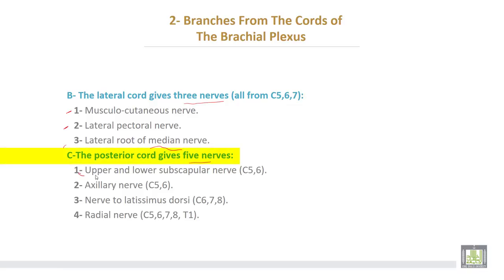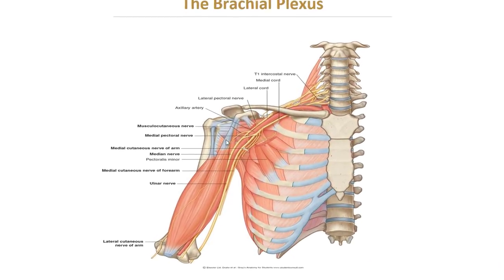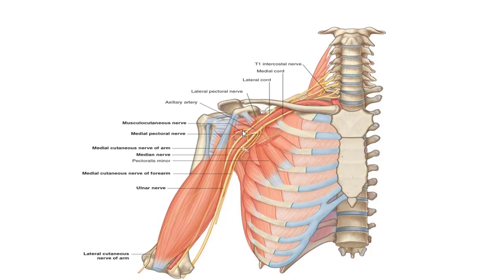The posterior cord gives five branches: upper and lower subscapular nerves, then the axillary nerve, the nerve to latissimus dorsi, and then the radial nerve. The axillary nerve is sometimes called the circumflex nerve. The lateral cord gives the musculocutaneous nerve, the lateral pectoral nerve, and the lateral root of the median nerve.